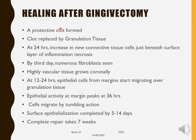Healing after gingivectomy: first, a protective clot forms. By 24 hours, the clot is replaced by granulation tissue with an increase in new connective tissue cells just beneath the surface layer of inflammation. By the third day, numerous fibroblasts are seen and highly vascular tissue grows coronally. Epithelial cells start migrating over the granulation tissue by 12 to 24 hours. Epithelial activity peaks at around 36 hours. Surface epithelialization is completed by 5 to 14 days, and complete repair takes approximately seven weeks — compared to two weeks for curettage.